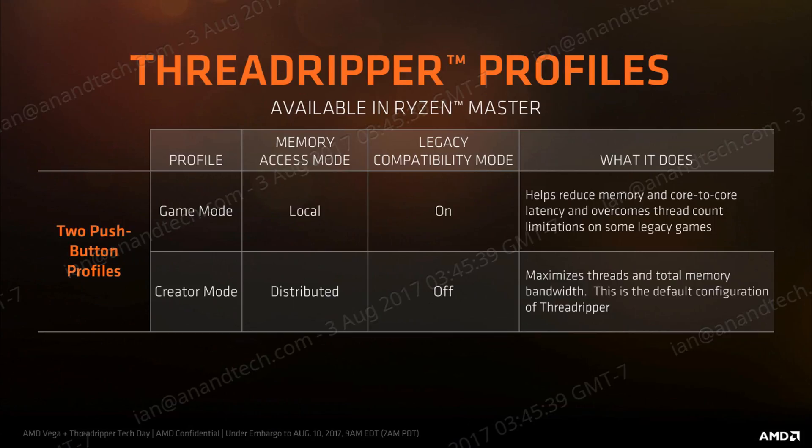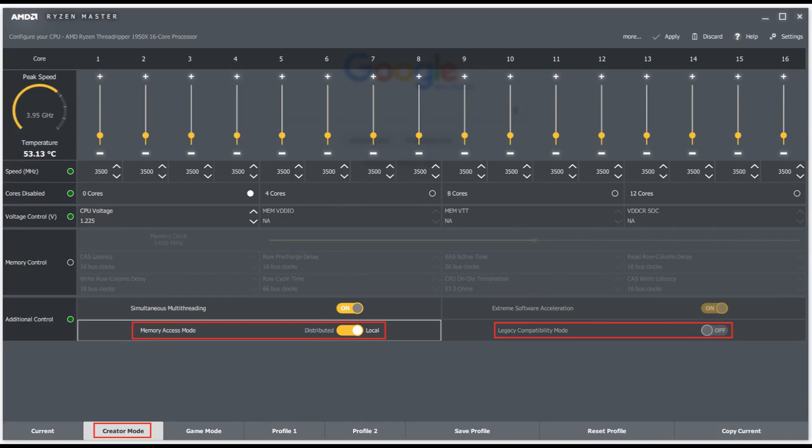Gaming mode also changes the way memory works — it's all local to one die. It lowers the latency dramatically because the dies aren't talking to each other. Whereas in Creators mode you have full memory flow but there can be some latency, which is not ideal for gaming. For a third test, I left it in Creators mode — the default — but switched only the memory to local, leaving legacy compatibility off and everything else unchanged.